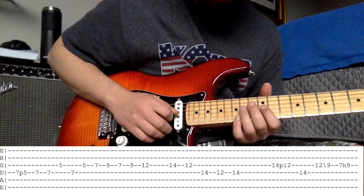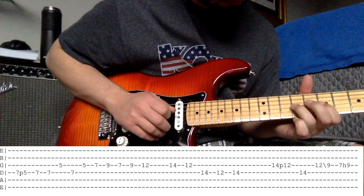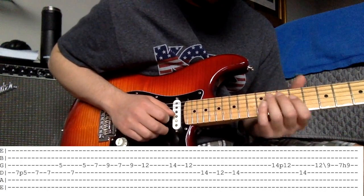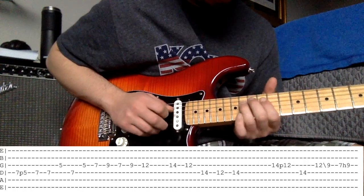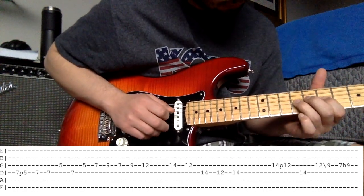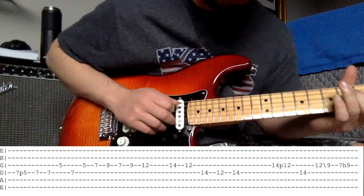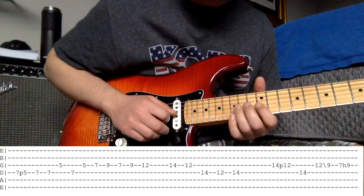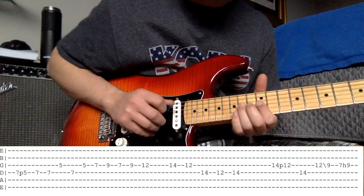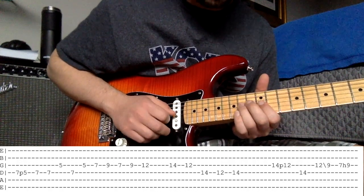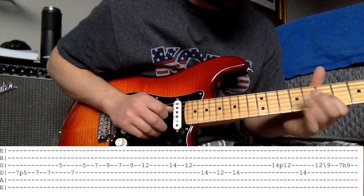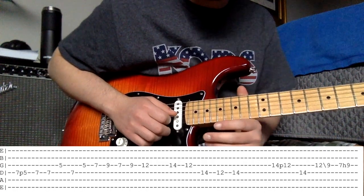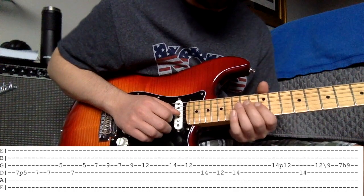So the next part's going to go just like this. What that is, is this little walk down. It's pull off 12 to 14 on the G, then 14 on the D, and it's pretty quick. If you listen to the recording, it goes by pretty quick, and he plays it a little lighter.